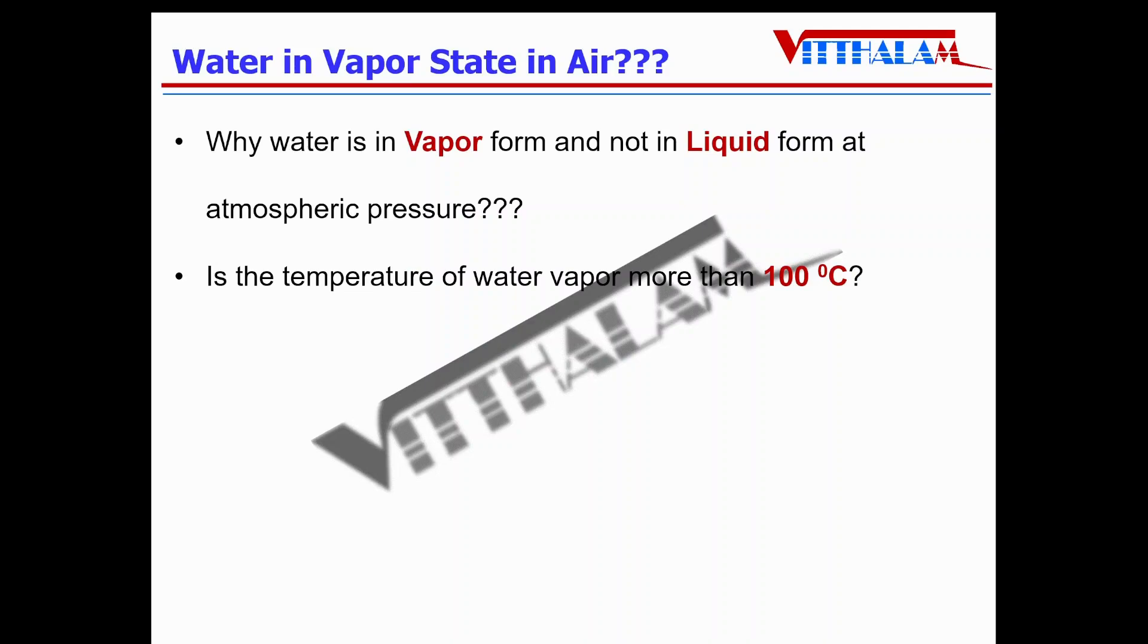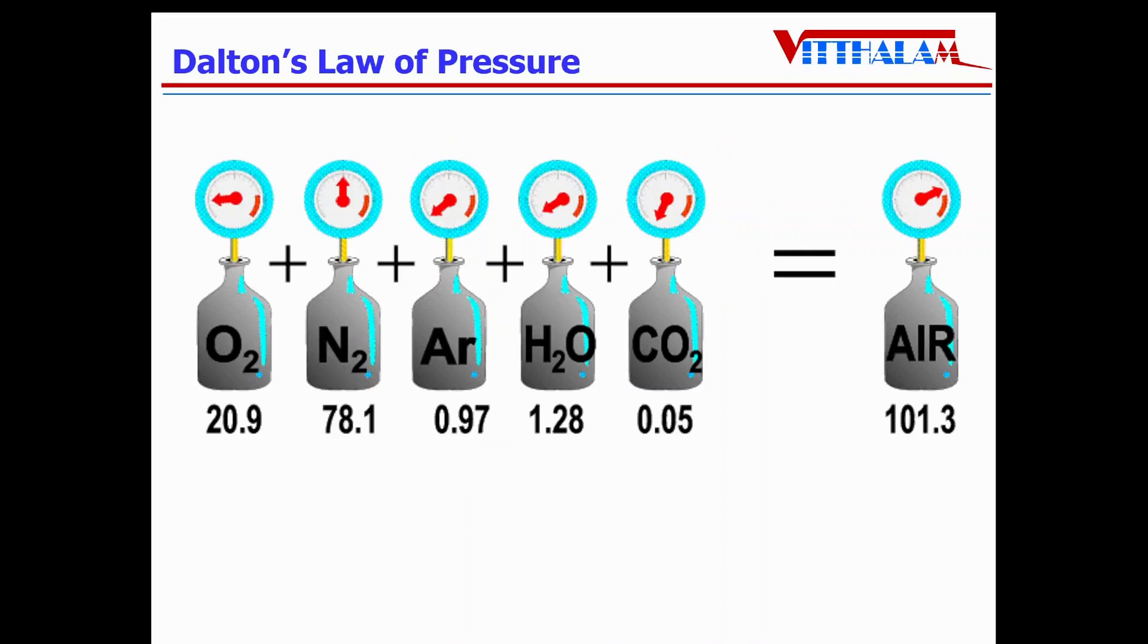So in order to understand that, let me explain the Dalton's law of partial pressures, which states that for any mixture of gas, the total pressure is equal to the sum of partial pressures of individual gases of that mixture.